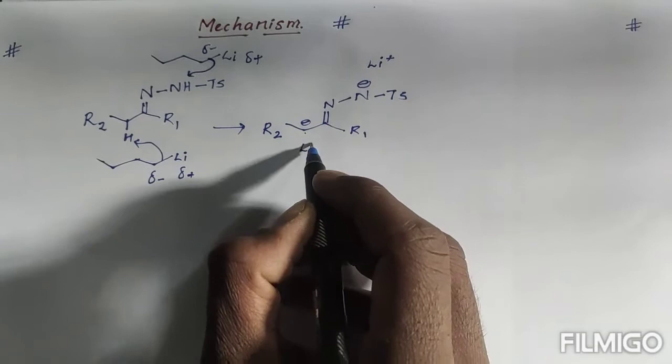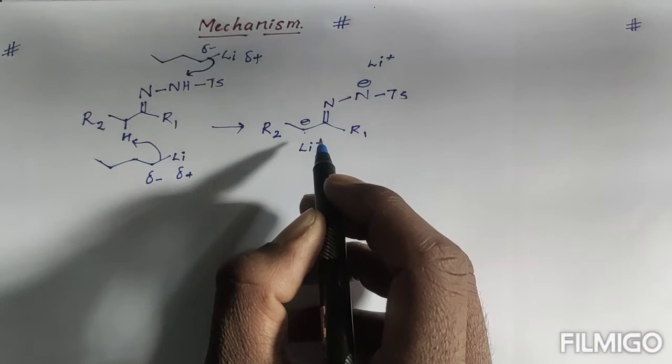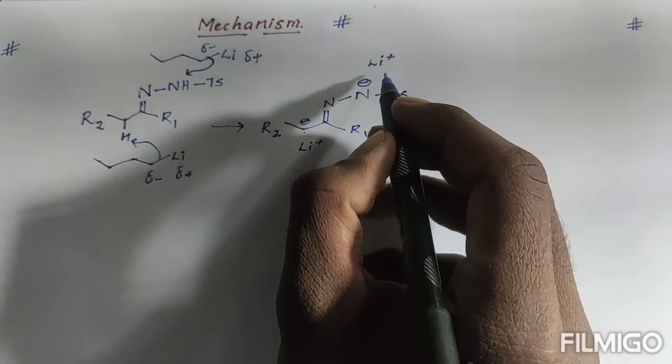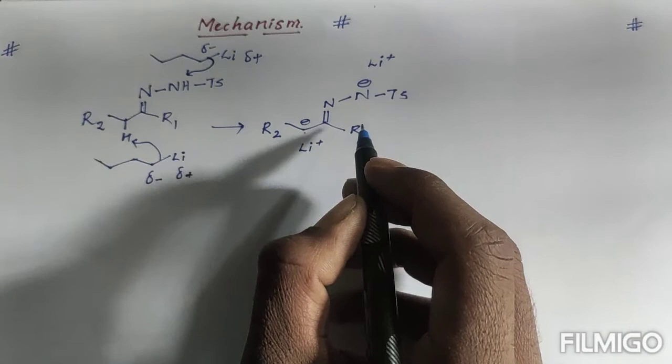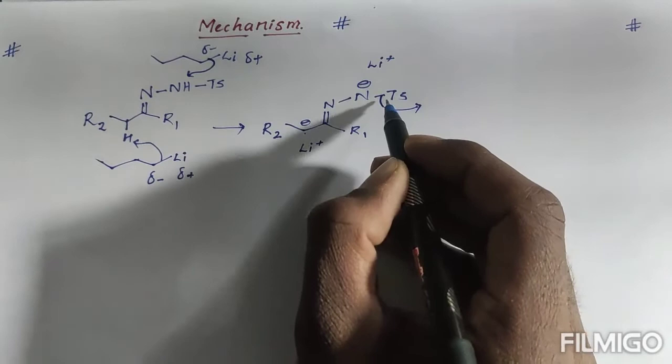Lithium (Li⁺) has a positive charge and roams in the reaction mixture, trying to bond with any electron-rich atoms because it needs electrons. The tosyl group is a good leaving group, so it takes the sigma bond electrons and leaves.